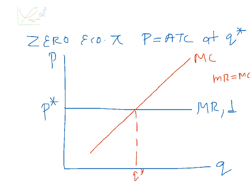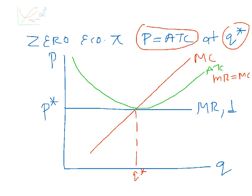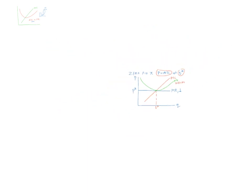We set marginal revenue equal to marginal cost to find Q-star. Now we claim this firm is making zero economic profit, which means price is equal to average total cost at Q-star. So you draw your average total cost curve in such a way to ensure that it intersects marginal cost at that point — going down, touches it, and goes up. That's zero economic profit graphically.